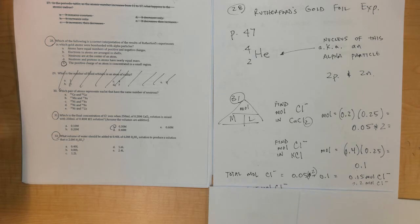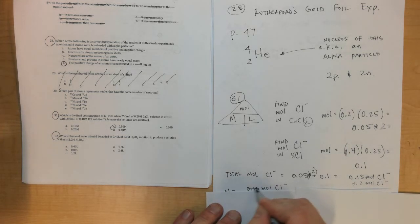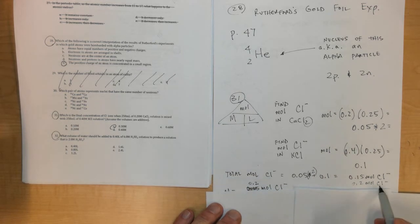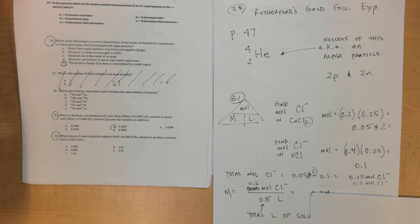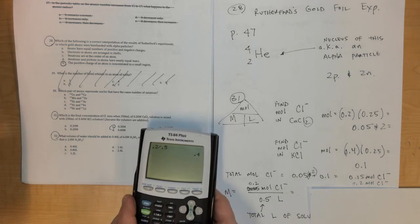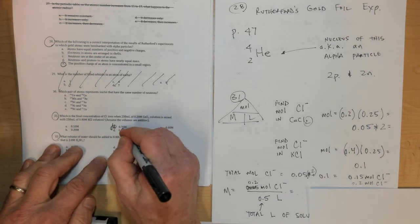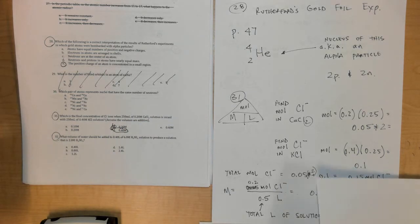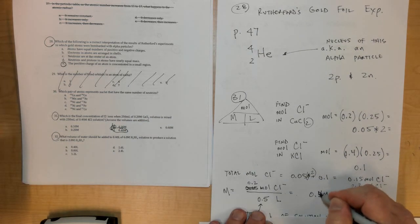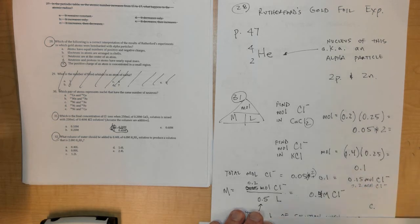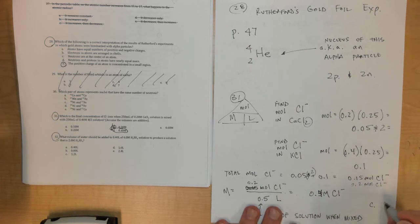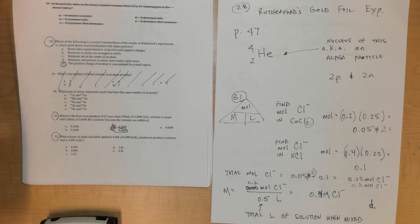Taking those together, I would take my 0.2 moles of Cl minus and divide it by my total number of liters of solution. 0.2 divided by 0.5 equals 0.4, so 0.4 would be my answer. That's D as in dirigible - 0.4 molar of Cl minus in the solution, which would be D for number 31.